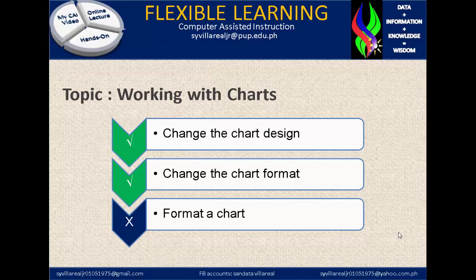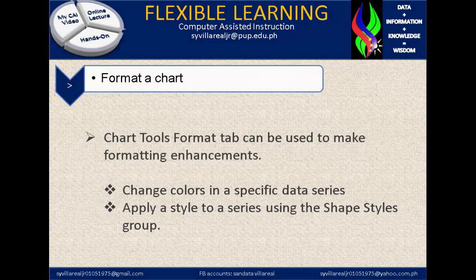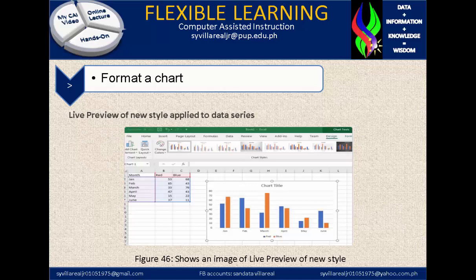Now let's move on to the last topic: format a chart. The chart tools format tab can be used to make formatting enhancements, such as changing the color in a specific data series and applying a style to a series using the shape styles group. In figure 46, it shows an image of a live preview of a new style. You will notice under the design tab, the data has been selected and the chart will pop up. There is also a chart title that can be changed, and even the legends below.